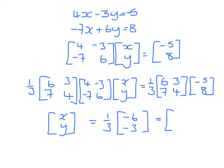Which when we multiply by 1 third gives us the matrix minus 2, minus 1. So x is minus 2, y is minus 1.